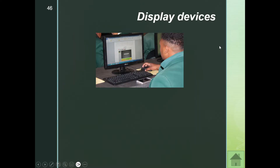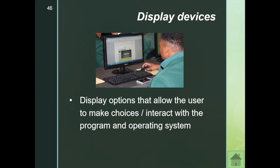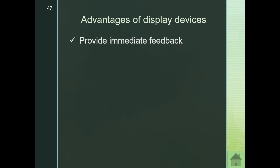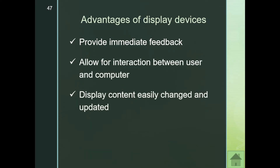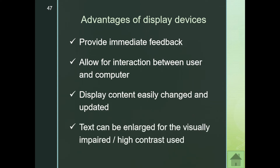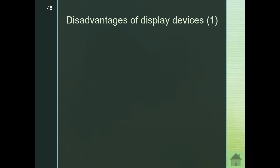Now we look at our display devices. Display options allow the user to make choices in how they interact with the program and operating system — how things are displayed on the screen. The display shows you the results of your processing. Think of a display device as your monitor. Advantages: it provides immediate feedback, allows interaction between user and computer, displays content that can be easily changed or updated, and text can be enlarged for visually impaired users.